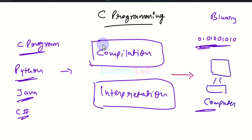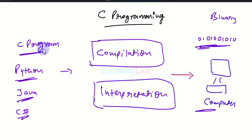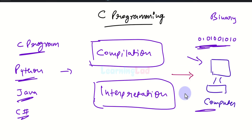When we use the compilation method, a program called the compiler takes the source code, reads the entire file, converts all the code to machine code, and then that machine code is executed on the computer.